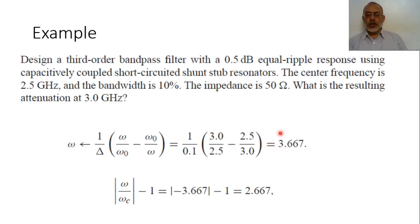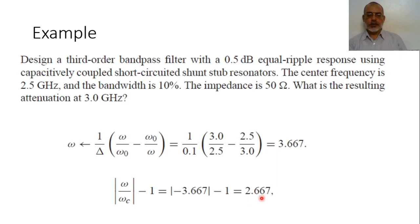For the corresponding omega of the lowpass filter prototype, we determine omega over omega_cutoff minus 1, where omega_cutoff in the lowpass filter prototype is 1. This gives 3.616 minus 1, which equals 2.667. So this is the value of omega over omega_c minus 1 for the lowpass filter prototype.